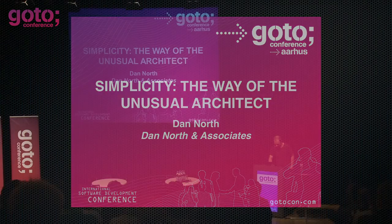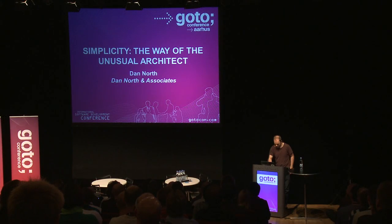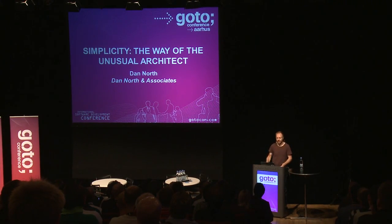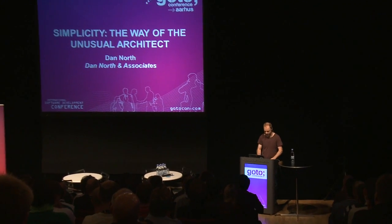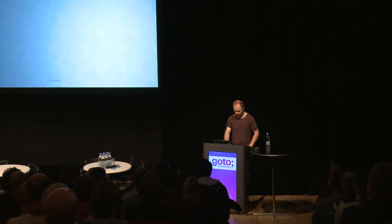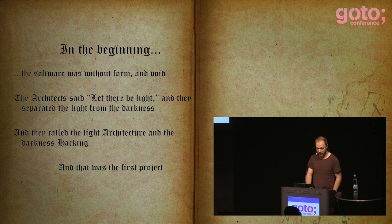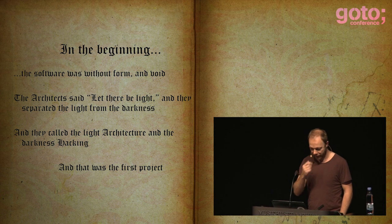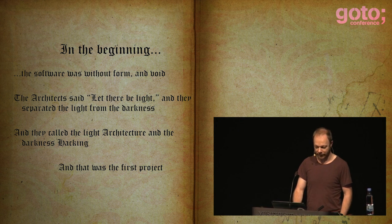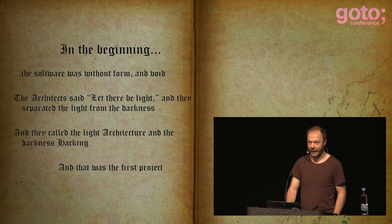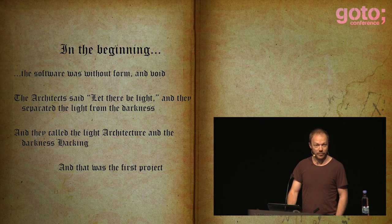This morning's reading comes from the Book of Geek in the Old Testament. In the beginning, the software was without form and void. The architects said, 'Let there be light,' and they separated the light from the darkness. They called the light architecture, and they called the darkness hacking. And that was the first project.